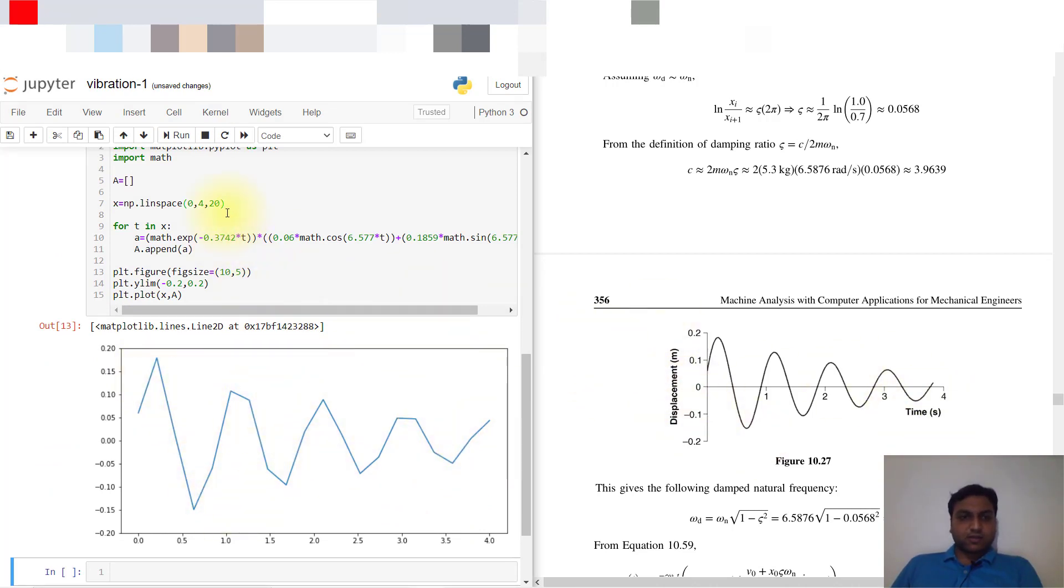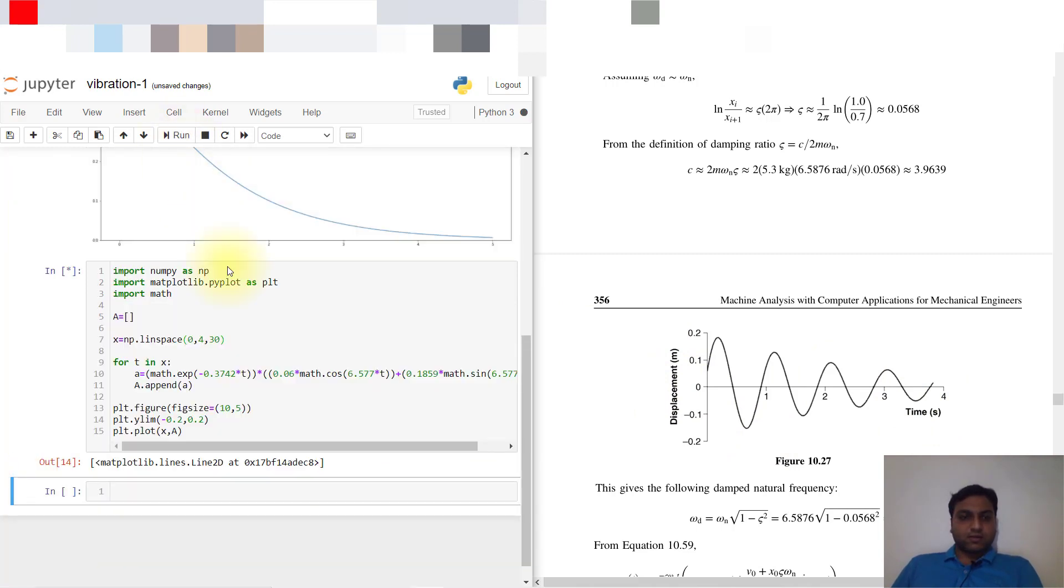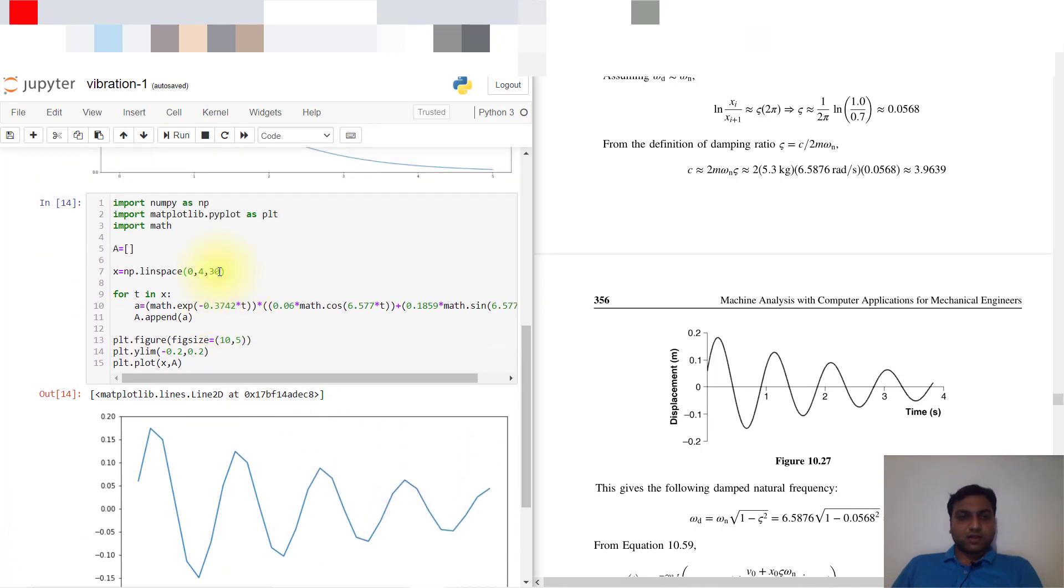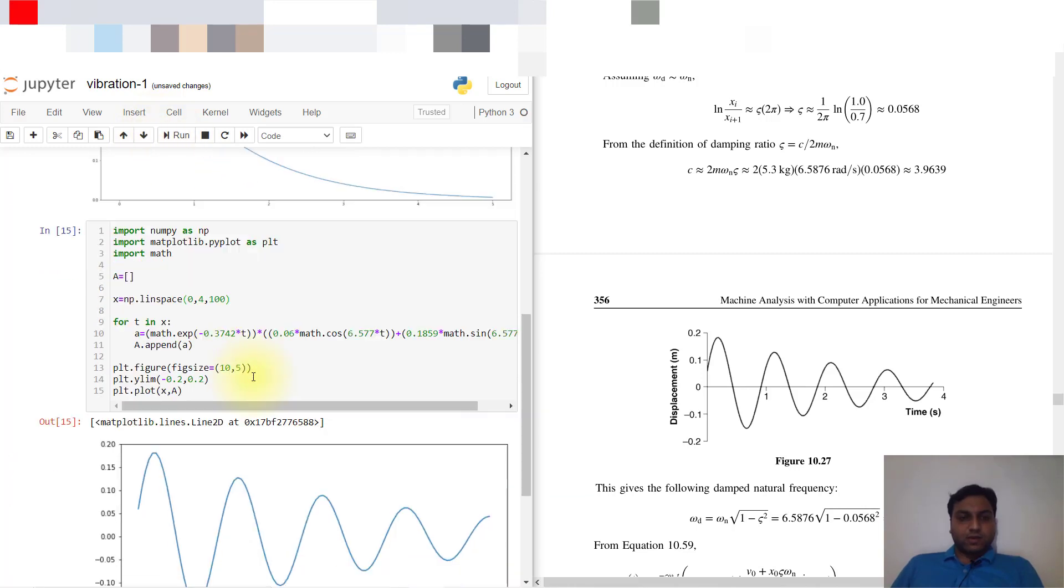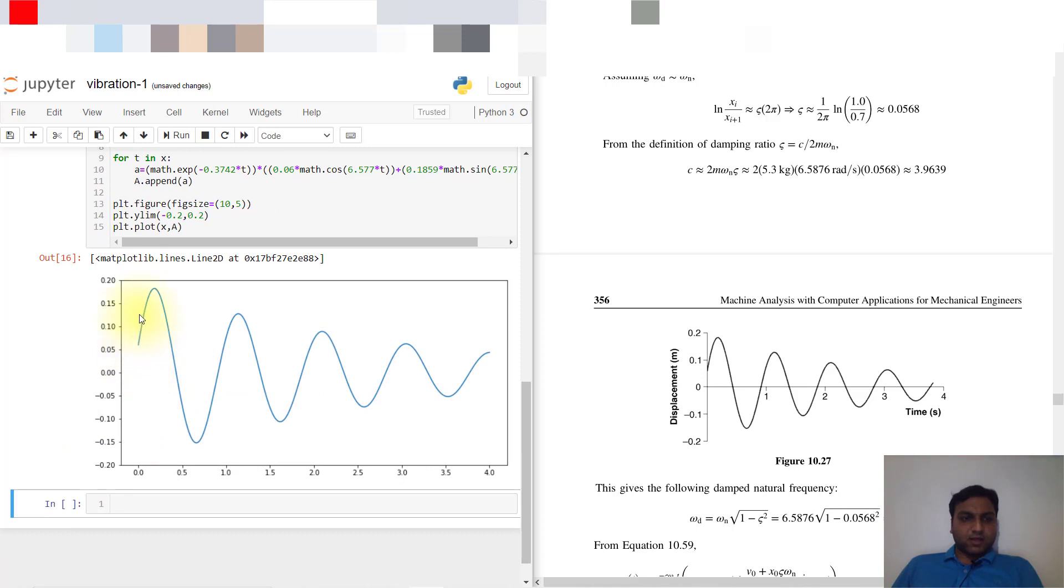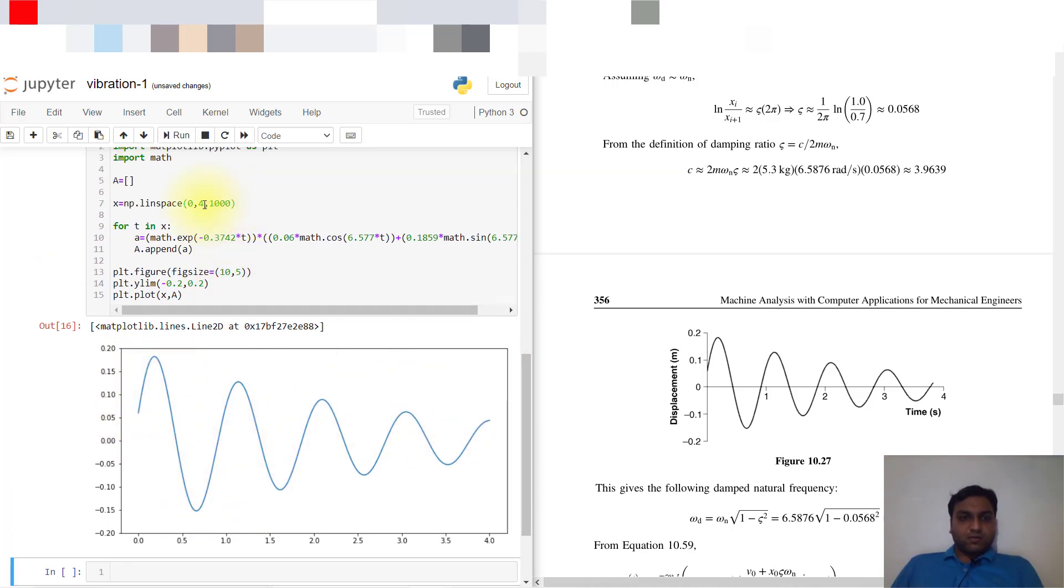I will increase the value, but it's still not good. If I write 100 divisions, here you can see I get exactly like this graph. If I again increase to 1000, it creates a smooth curve around this one.